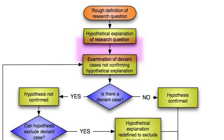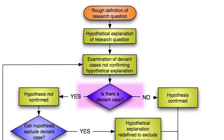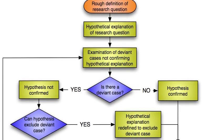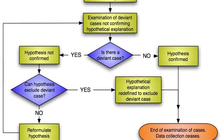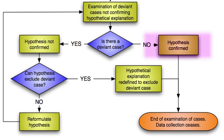Then you go through your data case by case. Cases can be individuals you've interviewed, departments in a company, groups of people, families, or even events — occasions on which something happens. For each case you ask: is it a deviant case? Does this case fit with the hypothesis? If the answer is that it's not deviant — it fits — and that's true of all cases, then your hypothesis is confirmed. You can say you have your explanation and write out your results.